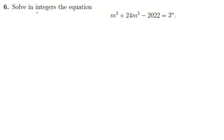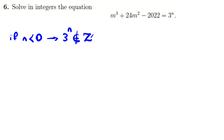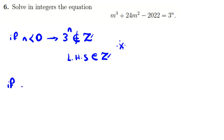The problem says: solve in integers the equation. The left side is an integer because m is an integer. If n is less than zero — that is, if n is negative — then the right side, 3^n, is not an integer, but the left side is an integer, and that's a contradiction. So we've eliminated the case of negative n.